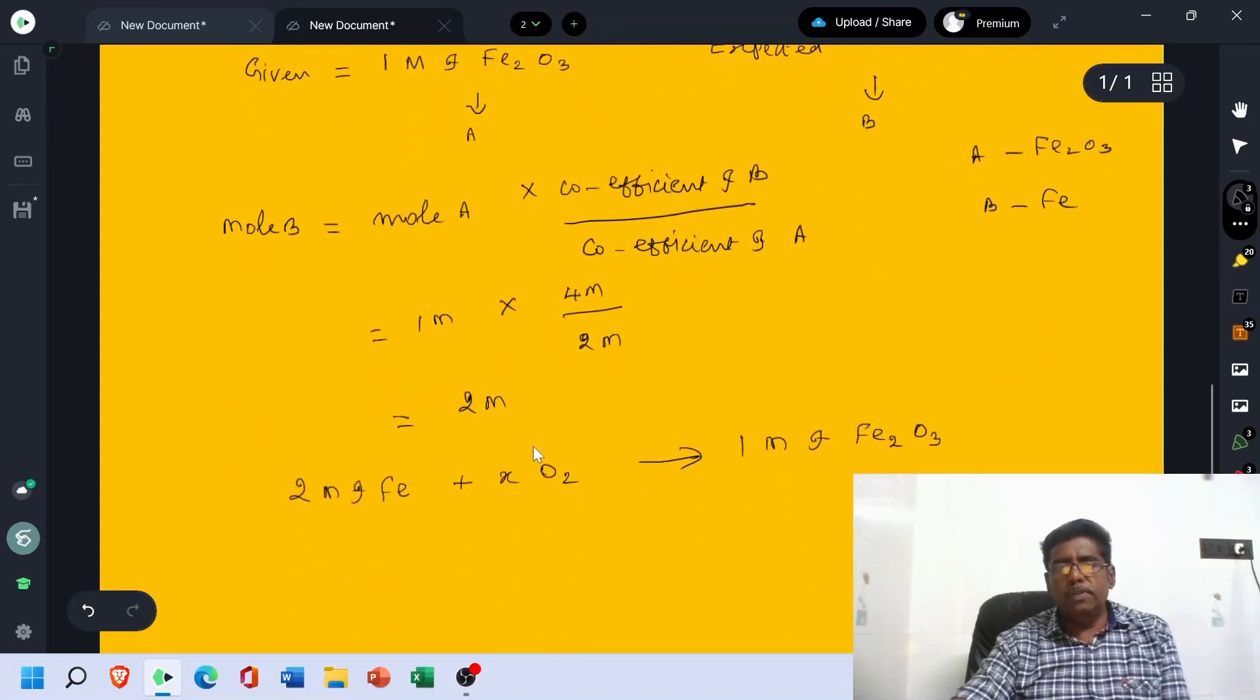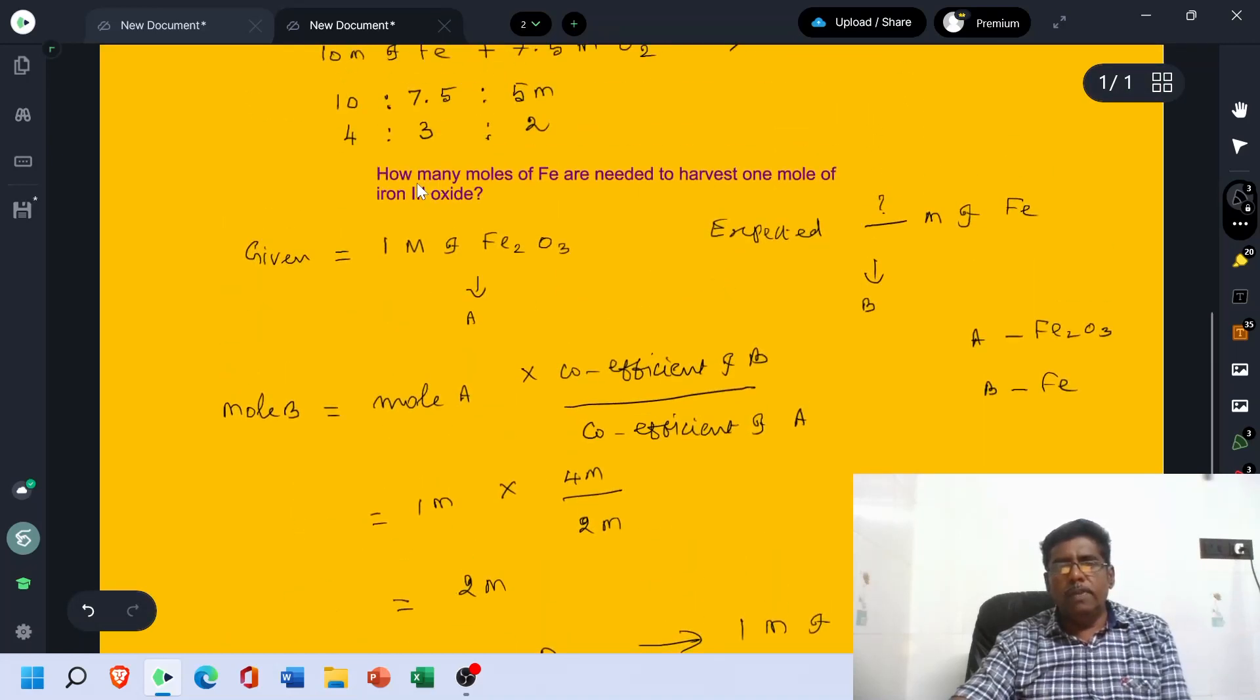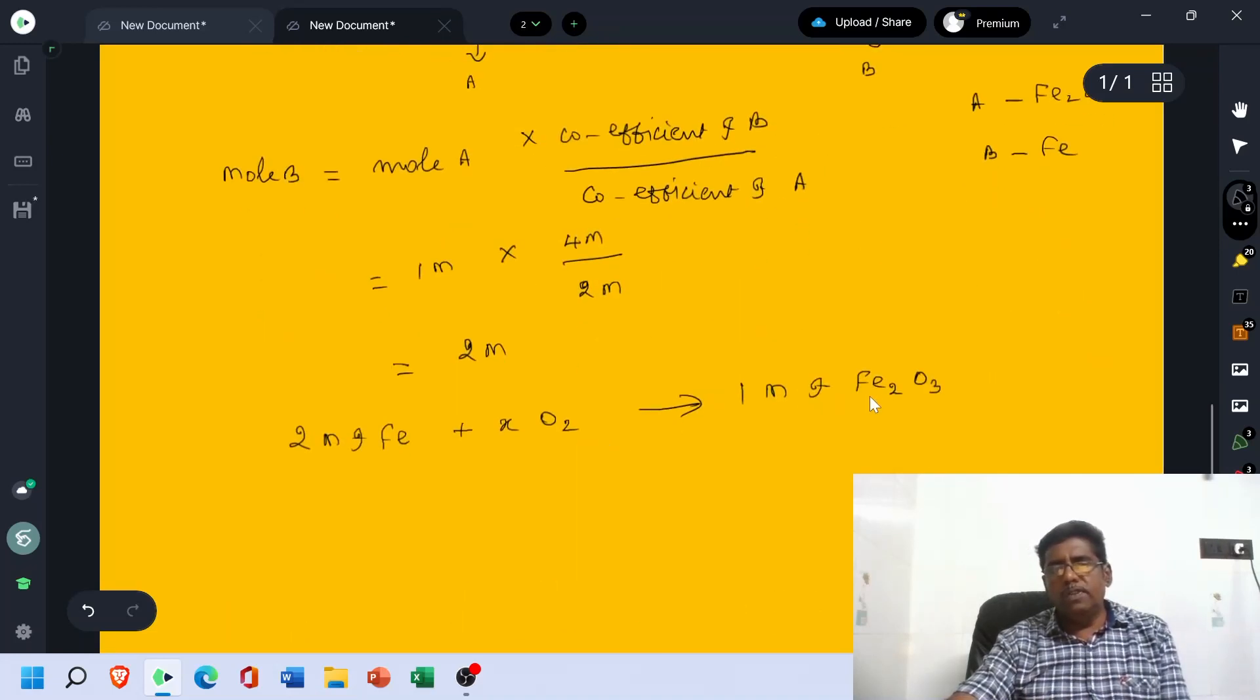So the answer to this problem is 2 mol. They have asked how many mols of Fe are needed to harvest 1 mol of Fe2O3. To harvest 1 mol of Fe2O3, we should take 2 mol of Fe.